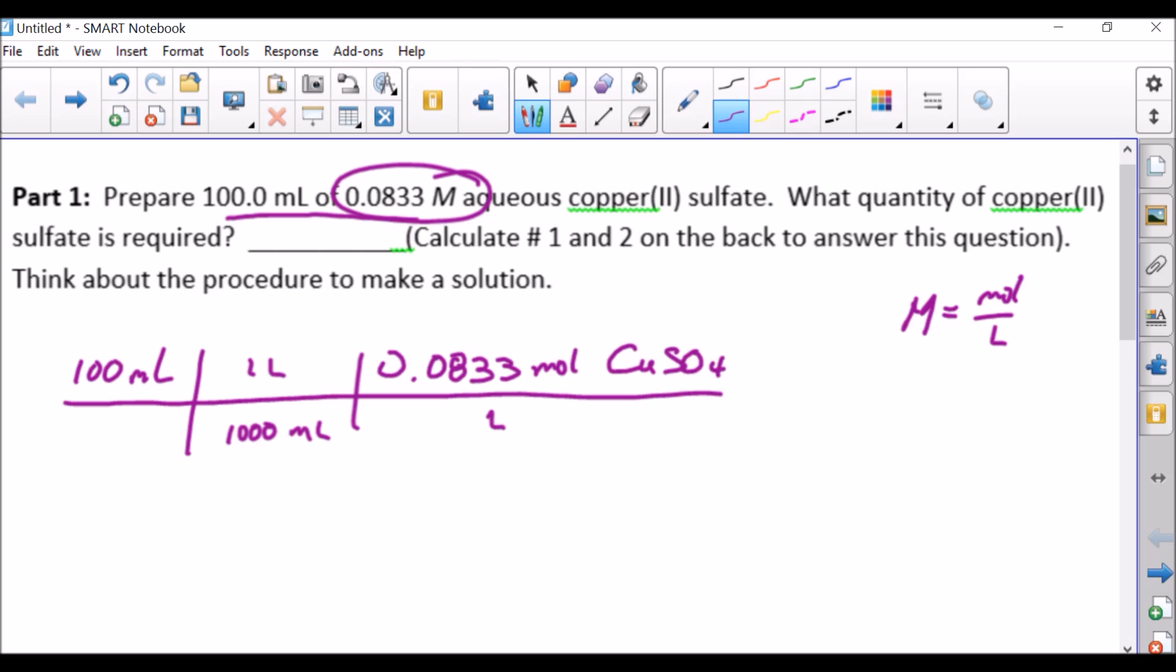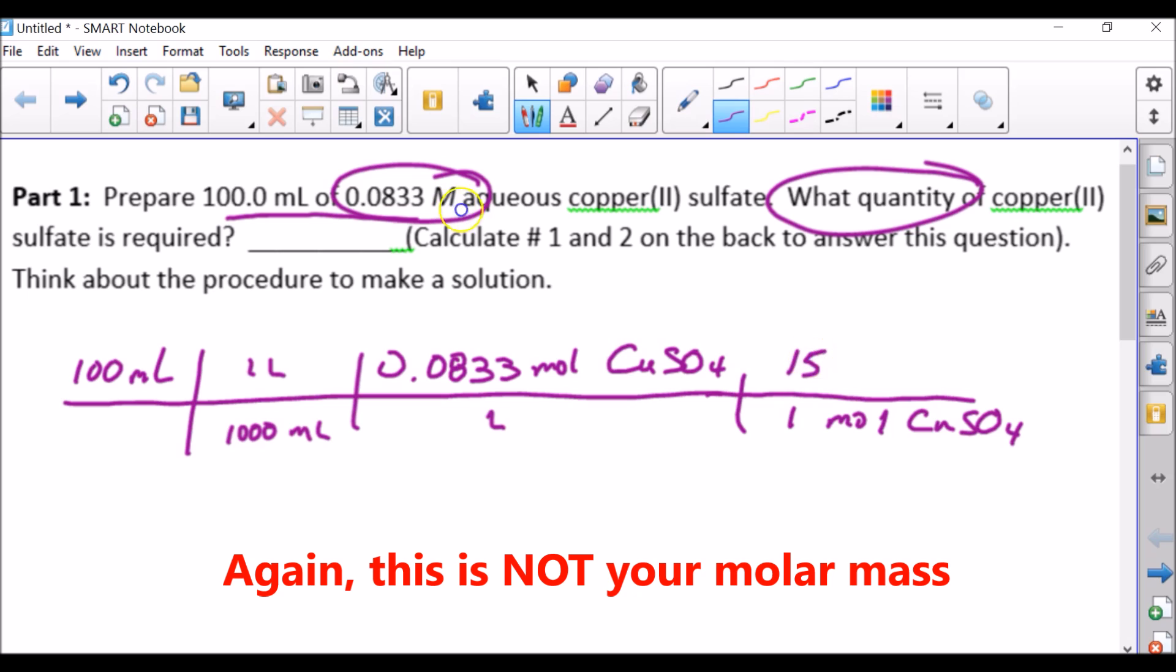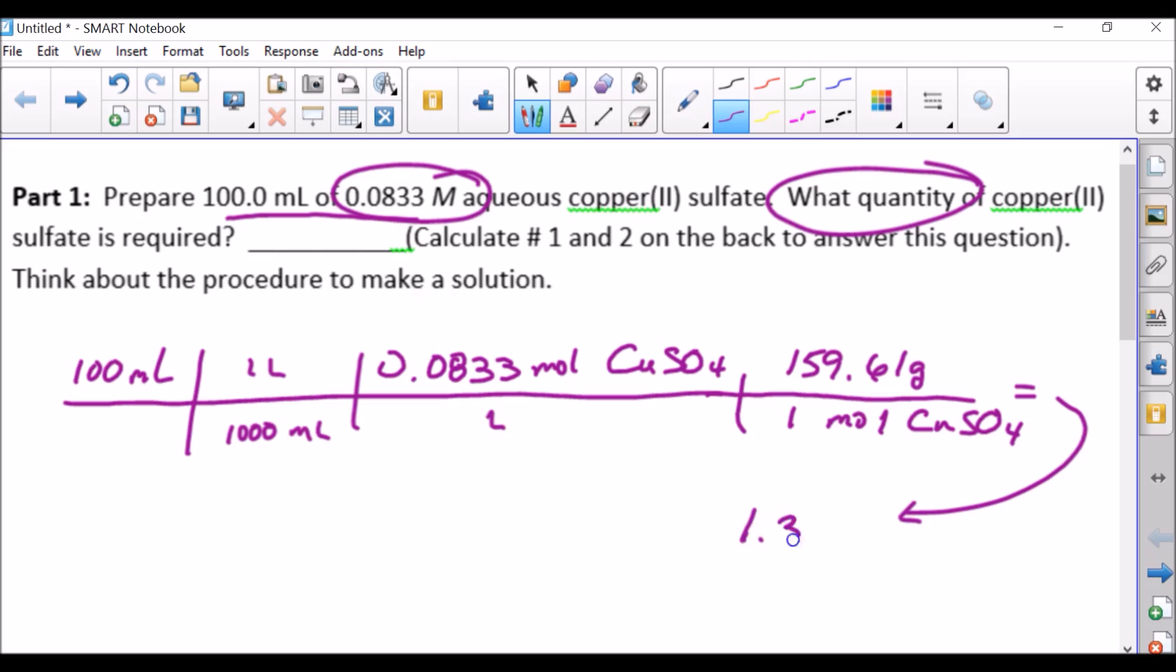But the thing is, when it asks for what quantity, there's no way to measure moles. So you have to measure out how many grams. So we need to convert this one more step. One mole of copper sulfate, and just like what we did in the first calculation, we found the molar mass. And in this case, it was 159.61 grams, and that gave us a value of 1.32 grams.